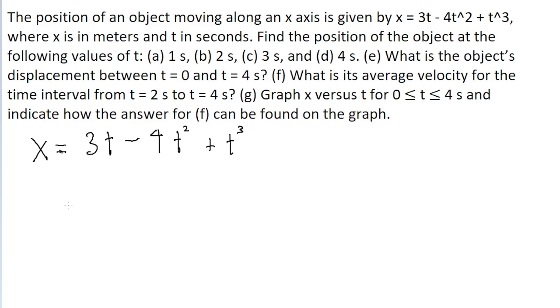If we want to find the position in meters of the object at any particular time in seconds, we can just substitute time in for the t variable and find the output. Part A of the problem, and really the first four parts, just ask us to plug in different values for t into this equation.